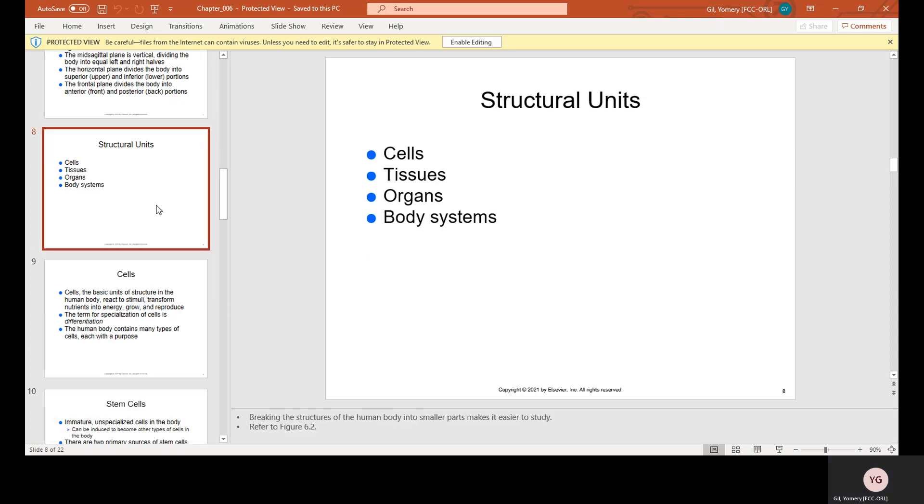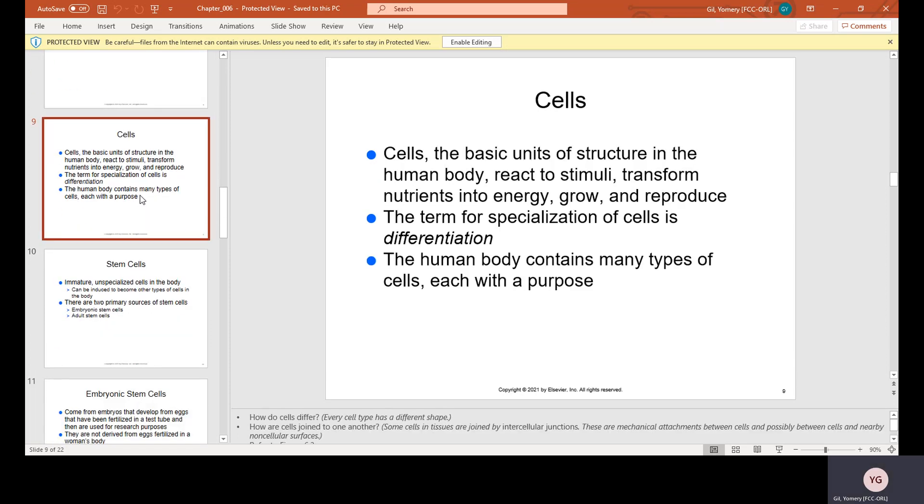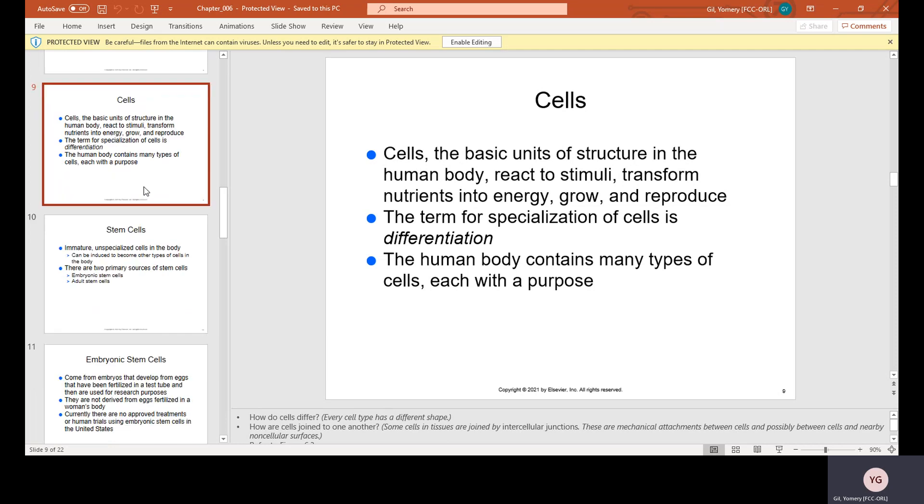Structural units: cells, tissues, organs, and body systems. Starting off with cells. Cells are the basic units of structure in the human body. They react to stimuli, transform nutrients into energy, grow, and reproduce. The term for specialization of cells is differentiation. The human body contains many types of cells, each with a purpose.